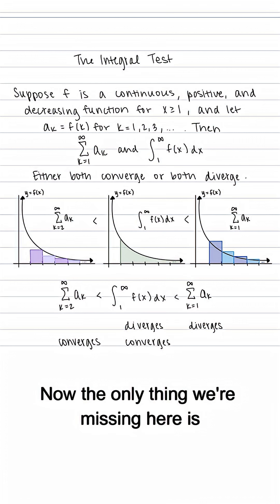Now the only thing we're missing here is the first term a_1, but that's going to be a finite number. So this tells us that our series still converges.